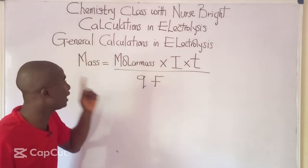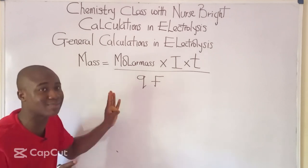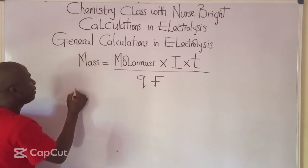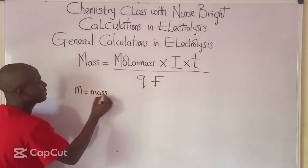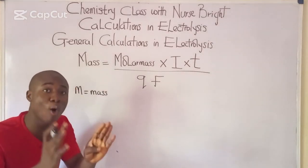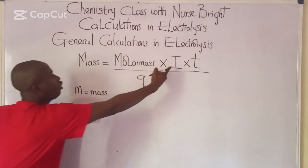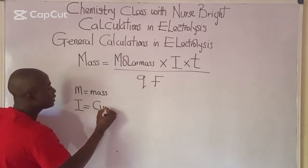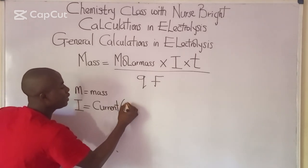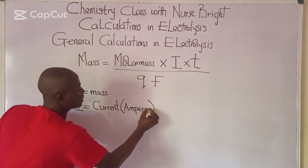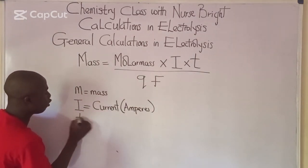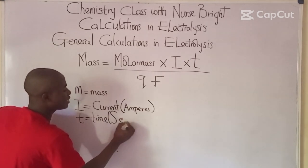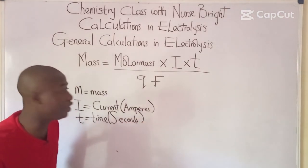The formula to be noted under this aspect must be remembered. M here is mass, and the other term is molar mass. I is current, which must be expressed in amperes, and T is time, which must be expressed in seconds.